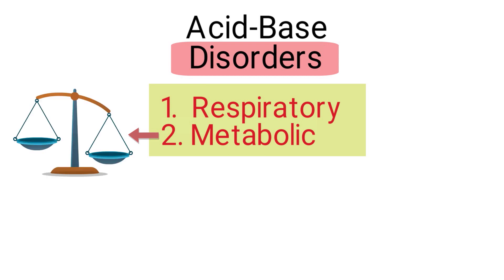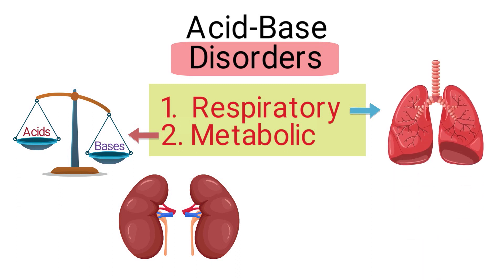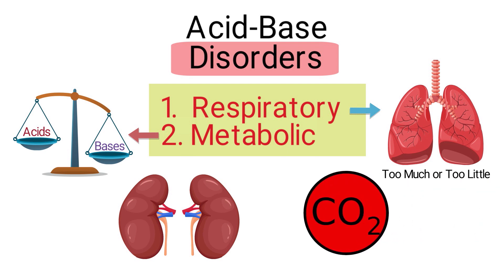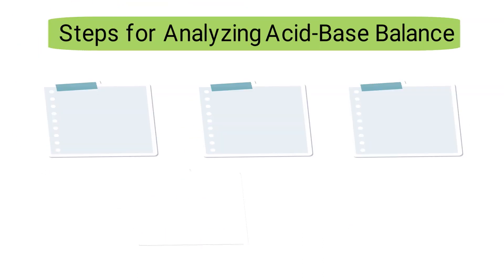Metabolic acidosis or alkalosis occurs when there is an imbalance in the production of acids or bases that results from a lack of excretion by the kidneys. Respiratory acidosis or alkalosis occurs when the lungs are removing too much or too little carbon dioxide due to a condition of the lungs.